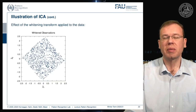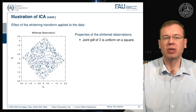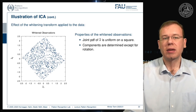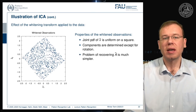This approach does capture the non-Gaussianity of the distribution. When we apply the whitening transform to our data, it maps onto a new space x-tilde1 and x-tilde2, where the joint pdf of x-tilde is uniform on a square. The components are then determined except for a rotation — we are just missing the correct rotation to map back onto our independent components.